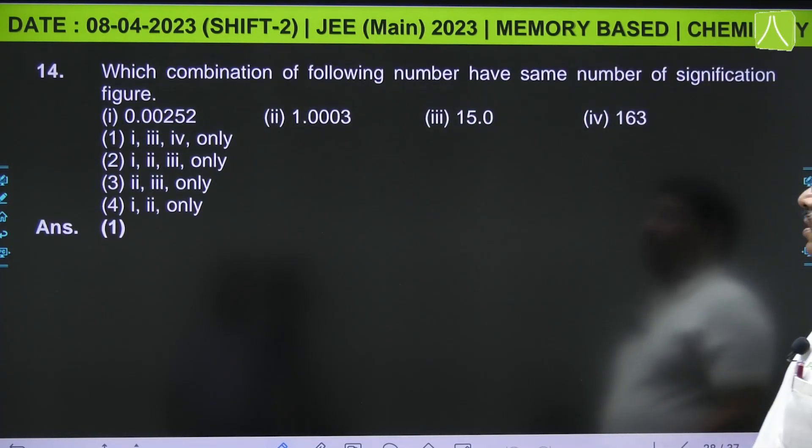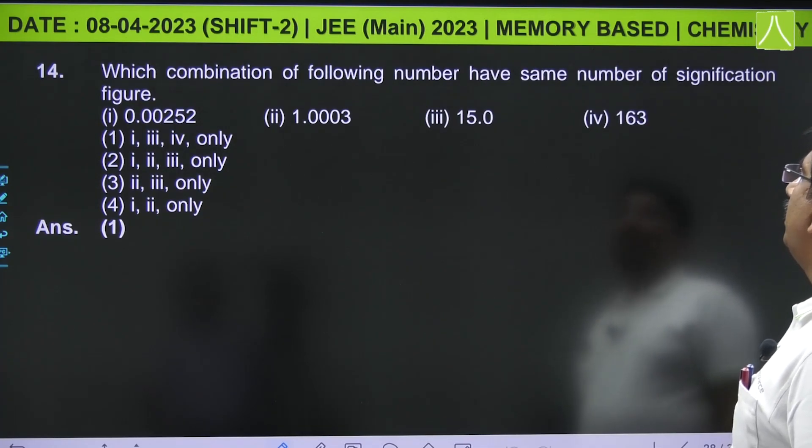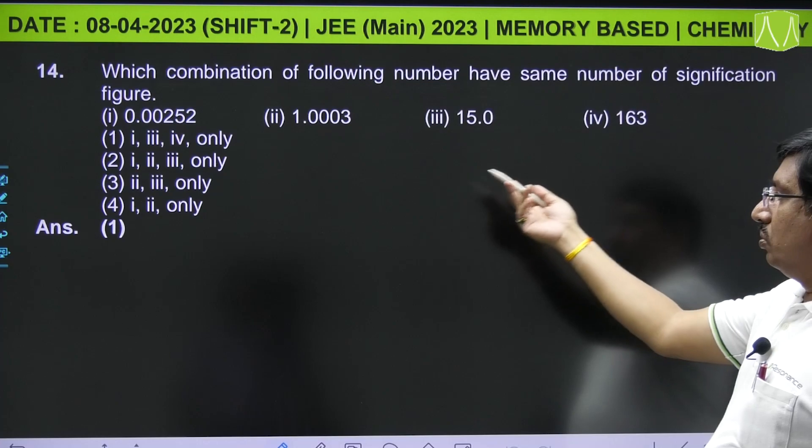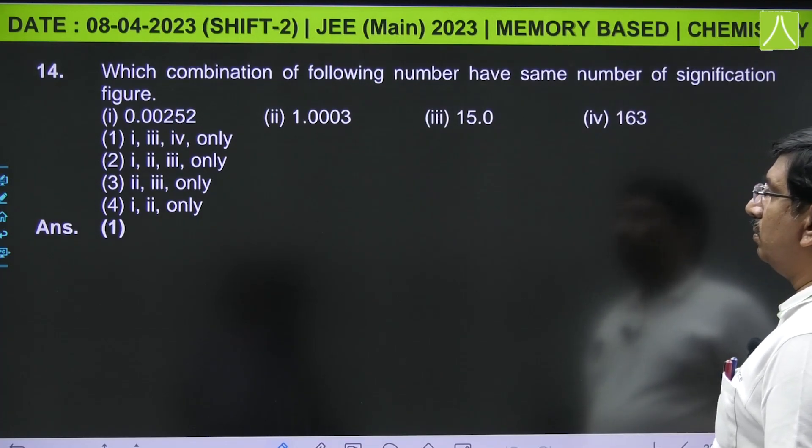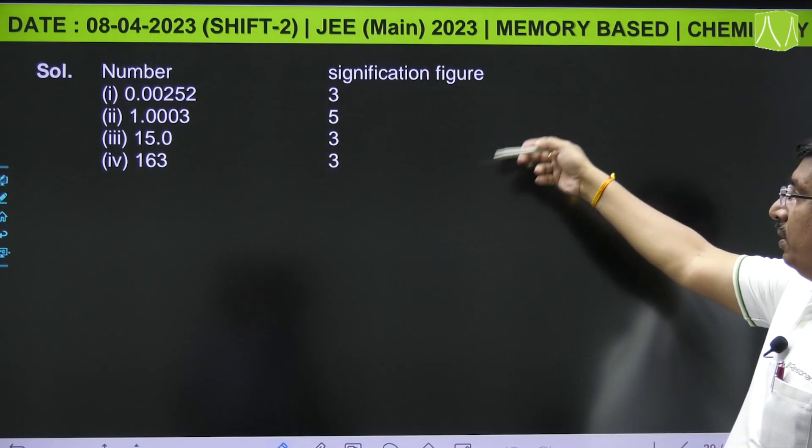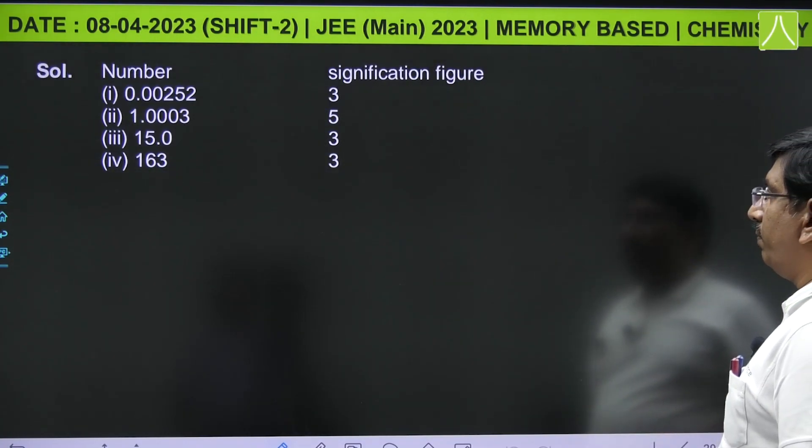Next, which combination of following numbers have same number of significant figures? The first one, 1, 2, 1, 3, and 4 only are having same number of significant figures.